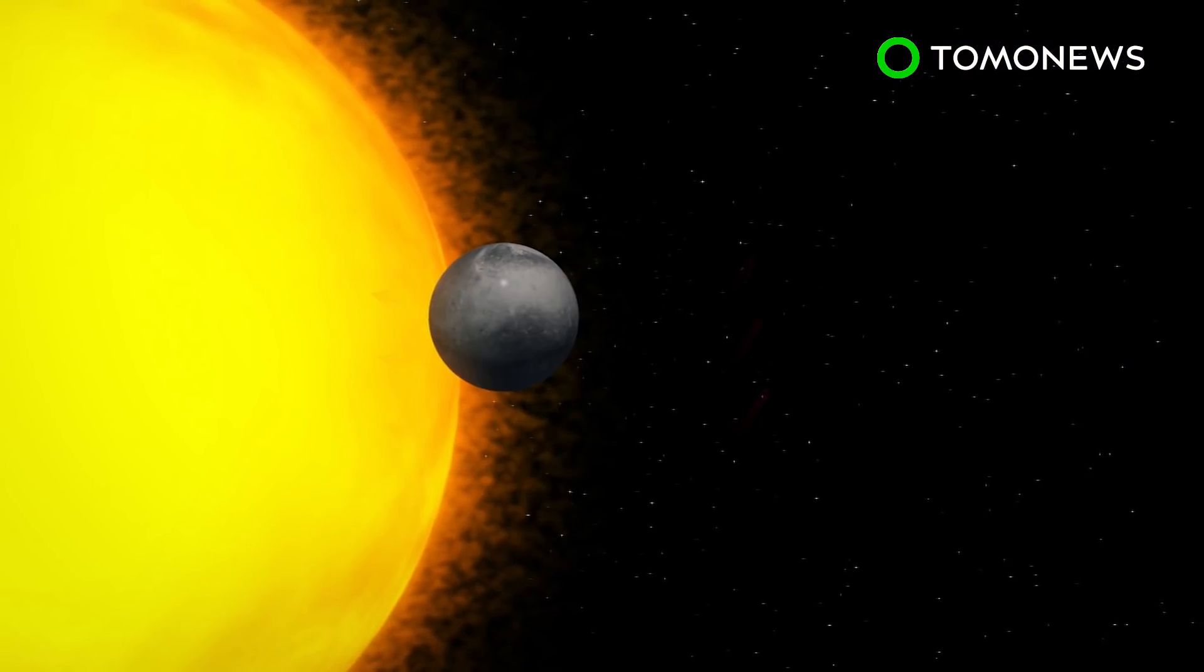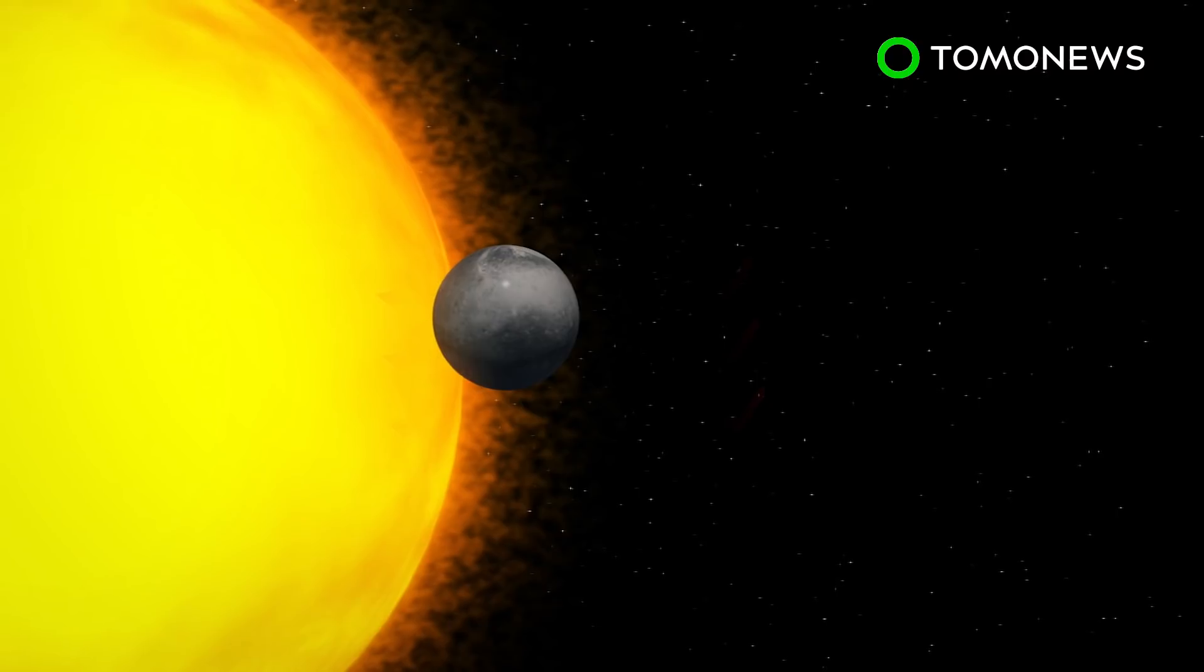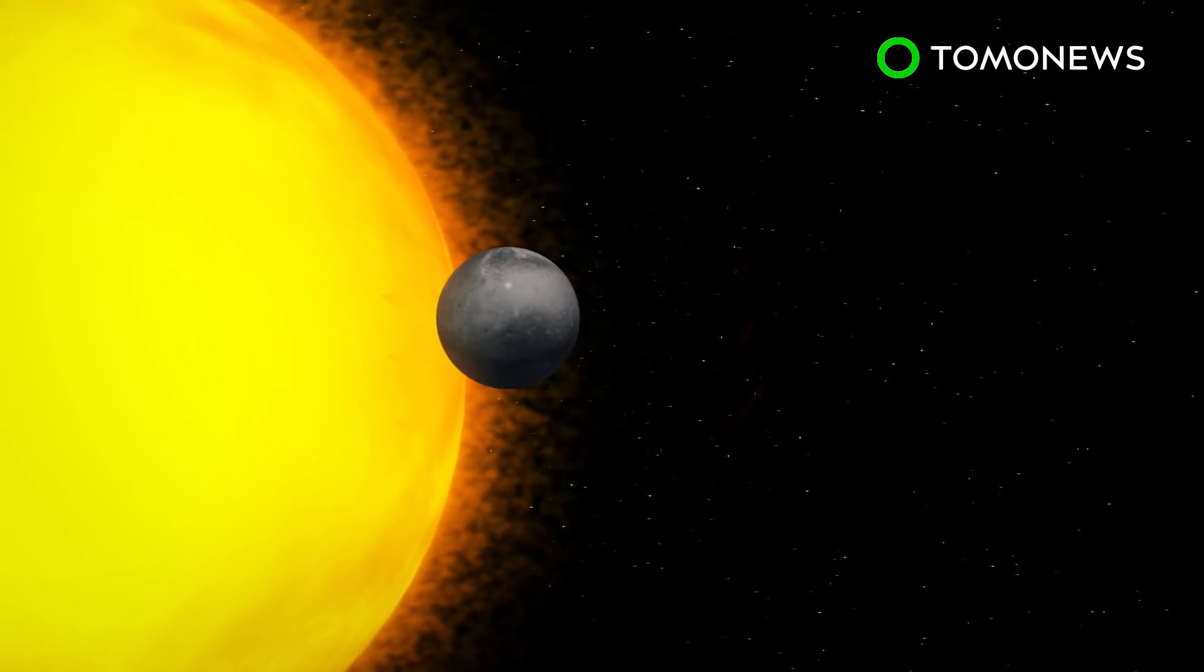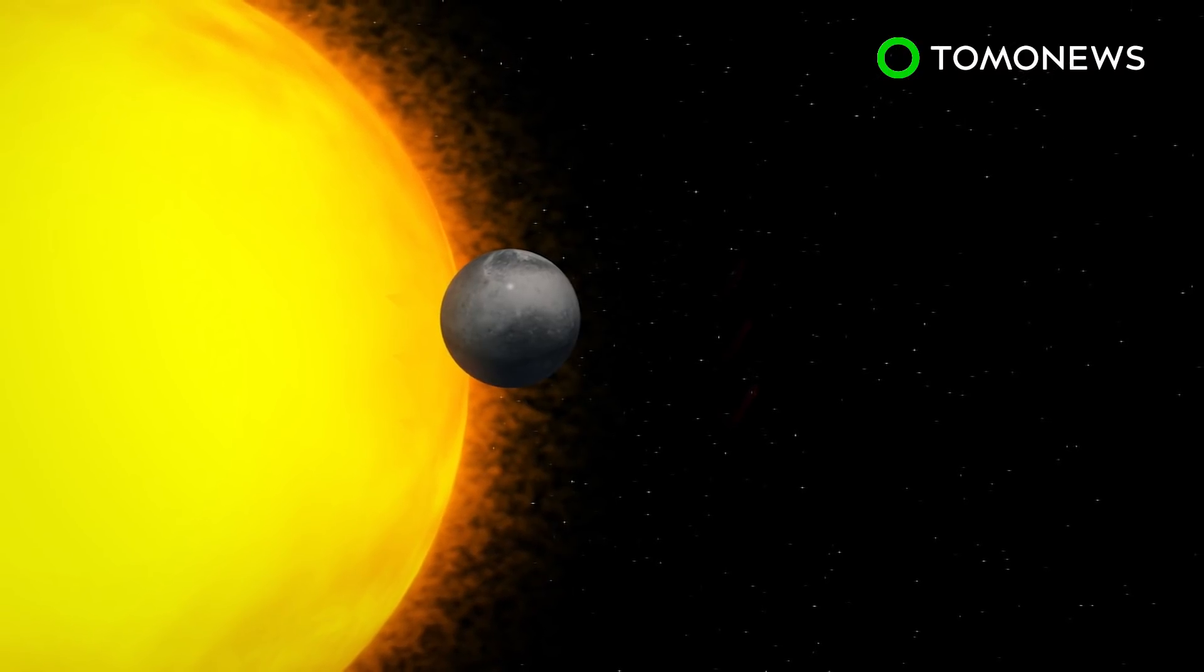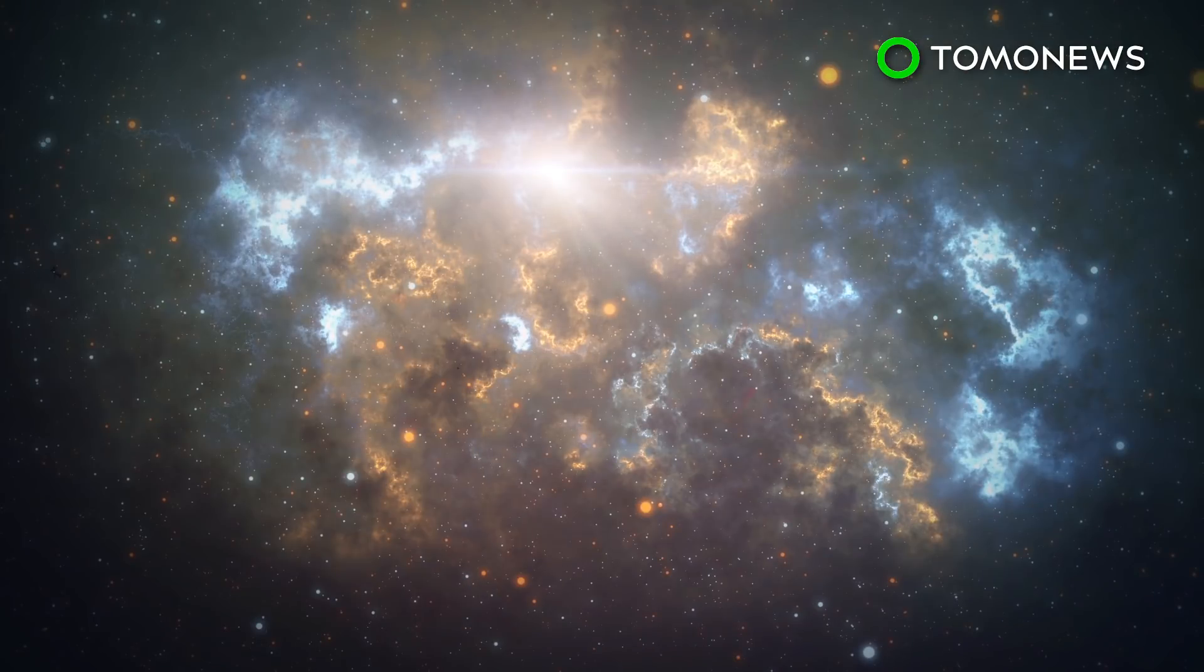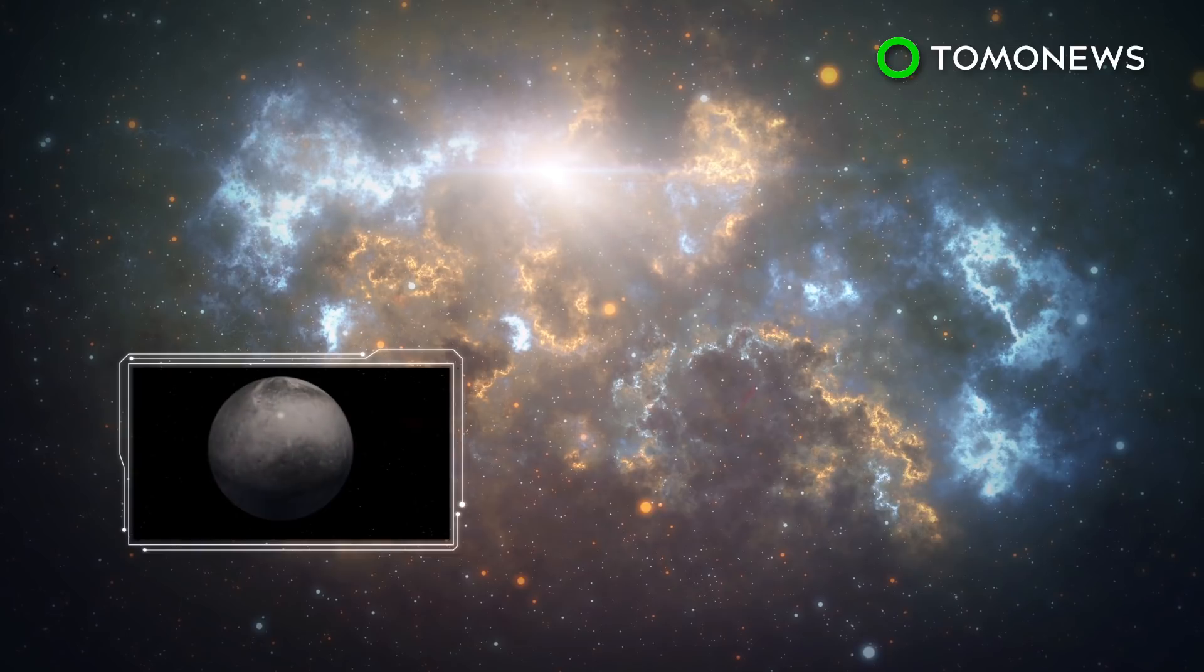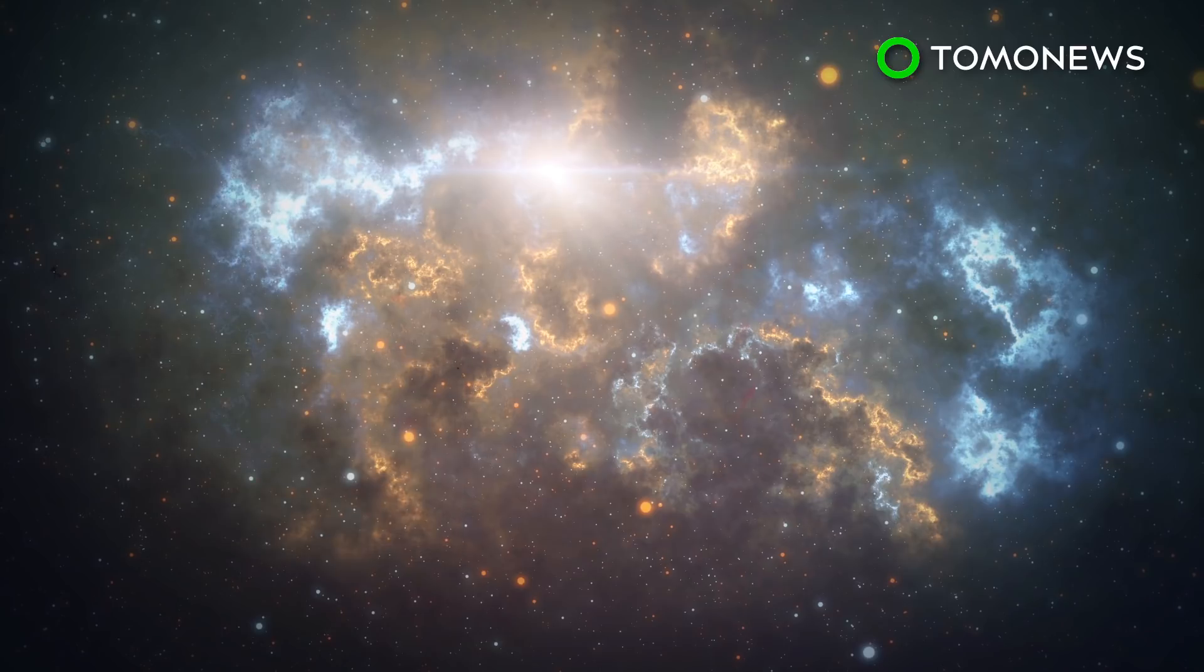Astronomers have discovered a Neptune-like exoplanet called NGTS-4b in the Neptunian desert region of a star. This refers to the area close to stars where no planet similar to Neptune's scale can be found. CNN reports this is the first time this type of exoplanet has been found in a star's Neptunian desert region.